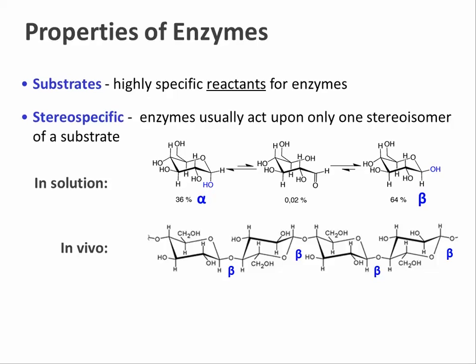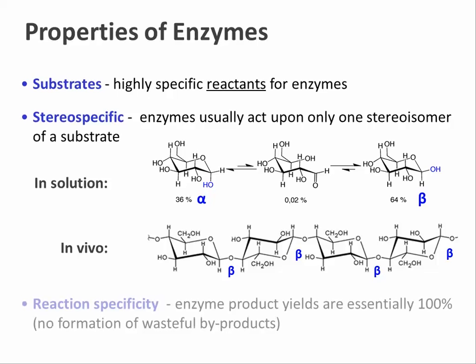Here, for example, in the biosynthesis of cellulose, glucose is only incorporated in the beta form. And finally, enzymes have exquisite reaction specificity. That means that there are no byproducts. The yield of the correct product is essentially 100%. This is actually a big difference from organic chemistry in the lab or in the factory, because chemists are forever fretting over yields and specificity and byproducts of reactions. Enzymes don't give us that problem.